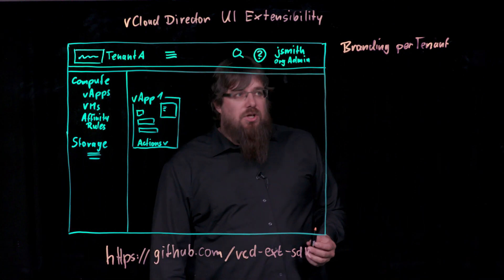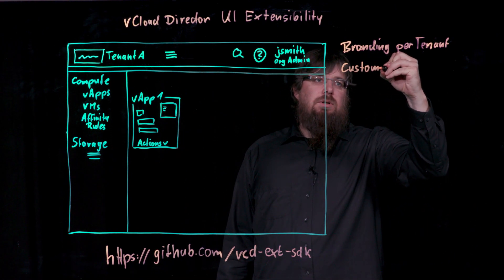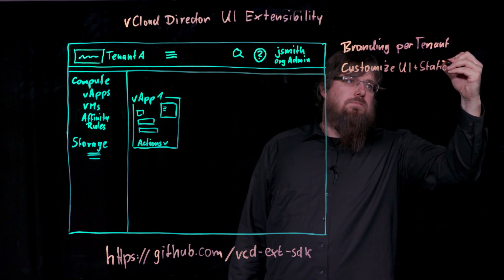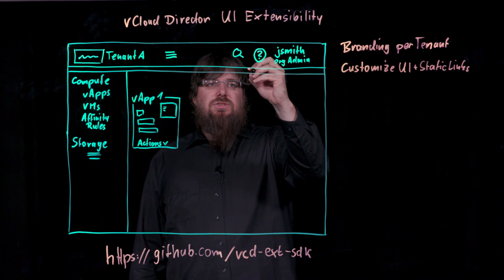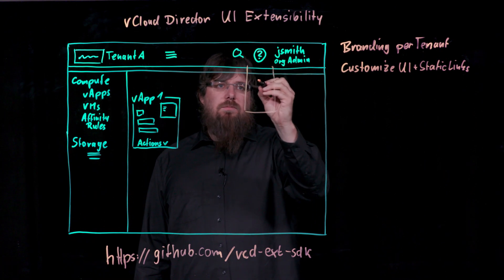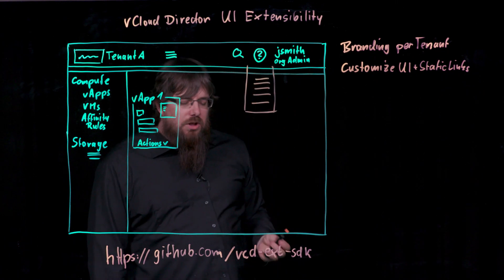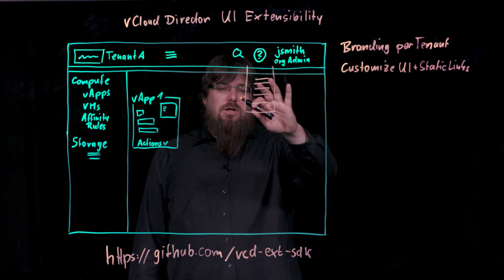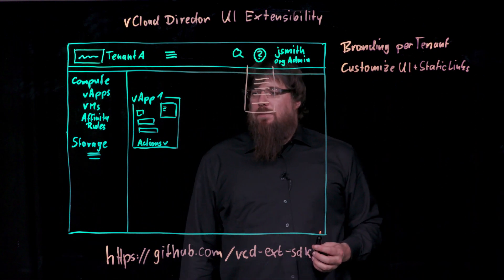In addition to branding, it is possible to customize the UI and add static links. This allows you to add your own custom links and modify the links that are visible in the help menu in the vCloud Director UI. For example, you can add links that point to your own documentation or your own support page. The links are shown within the tenant UI and can point to whatever external web page you want.